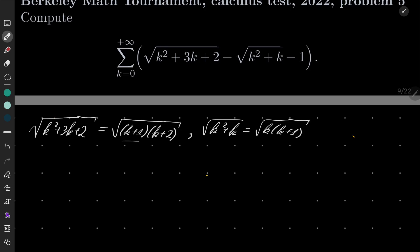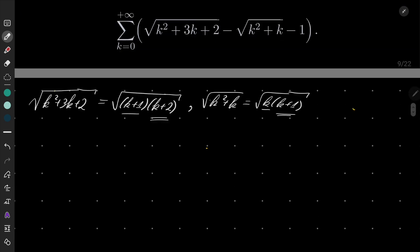And we see that this differs from this by 1. So the telescoping sum will be the sum from k equals 0 to capital K of square root of (k+1)(k+2) minus square root of k(k+1) minus 1.